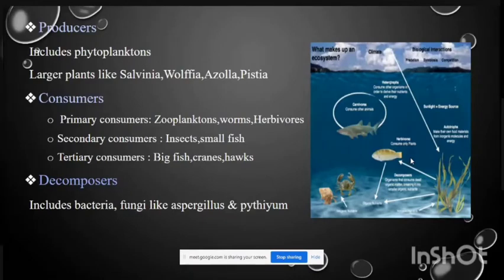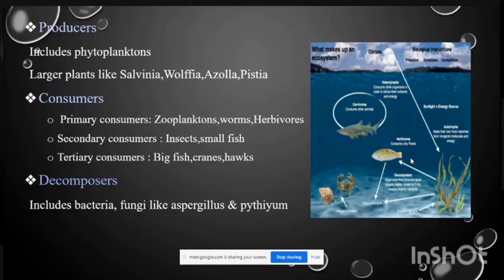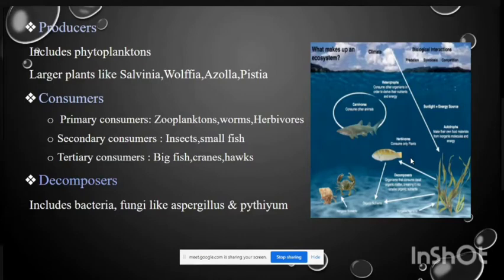There are three types of consumers: primary, secondary, and tertiary. Primary consumers include zooplankton, worms, herbivores, and crabs. Secondary consumers include insects and small fish. Tertiary consumers include big fish, cranes, and hawks. Decomposers include bacteria and fungi such as Pythium and Aspergillus.